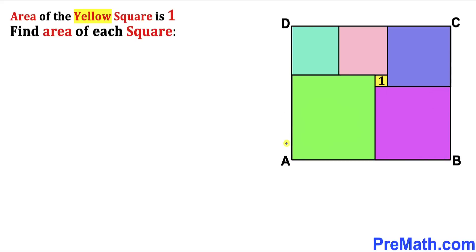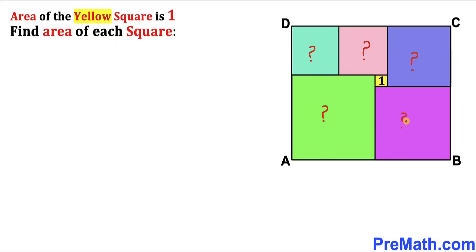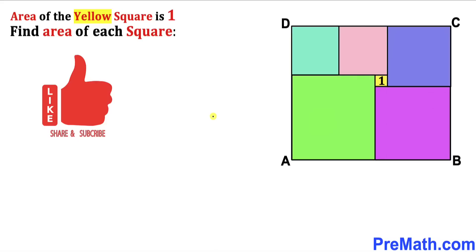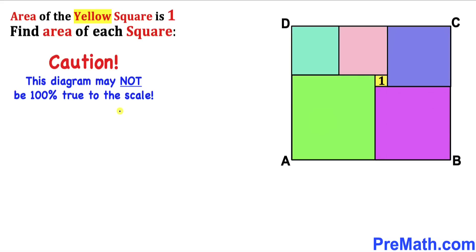Welcome to Pre-Math. In this video we have got this rectangle ABCD that consists of a bunch of squares as you can see in this diagram. Moreover, the area of this tiny yellow square has been given to us as one, and now we are going to calculate the area of each and every square. Please don't forget to give a thumbs up and subscribe. Note that this figure may not be 100% true to scale.